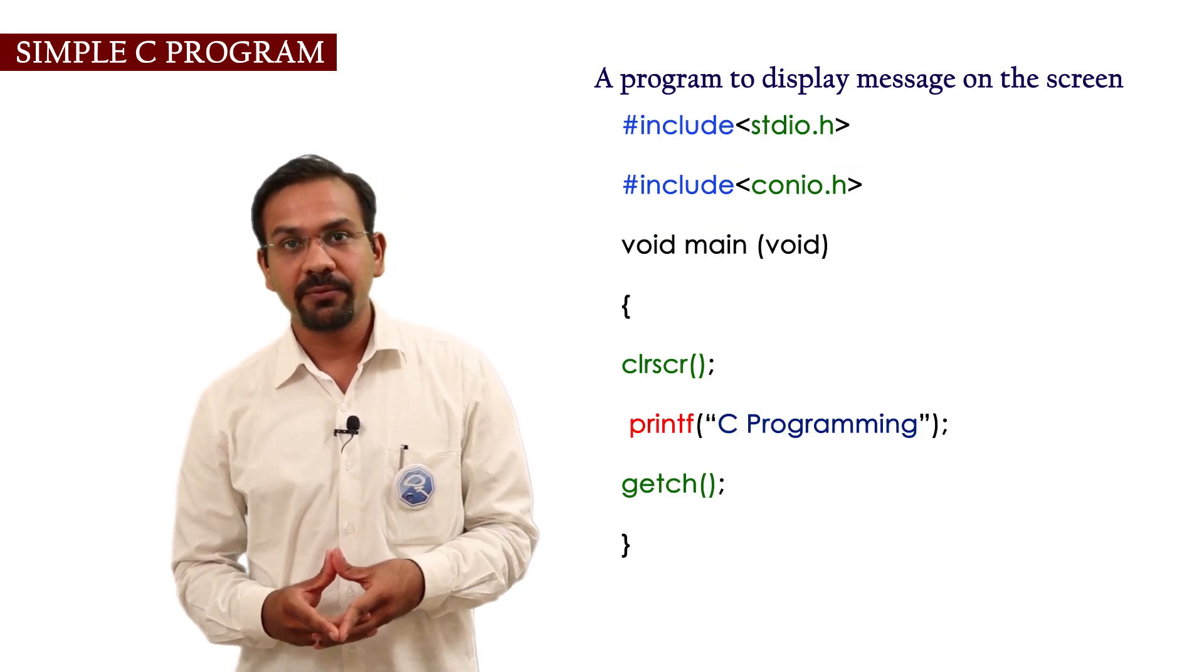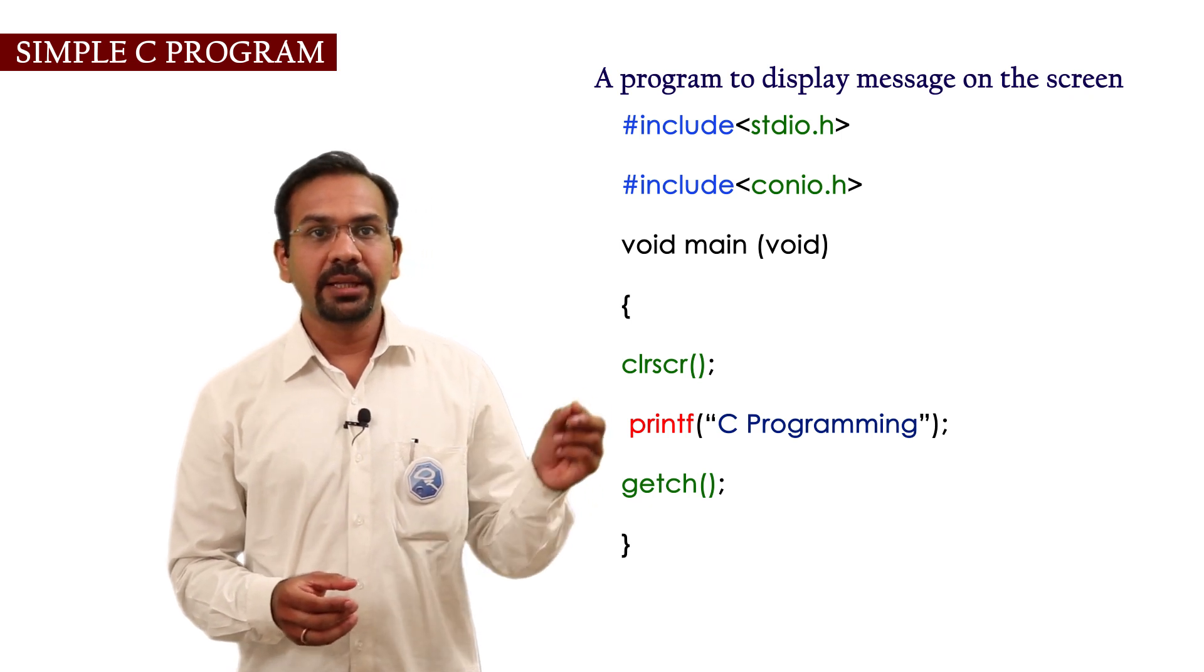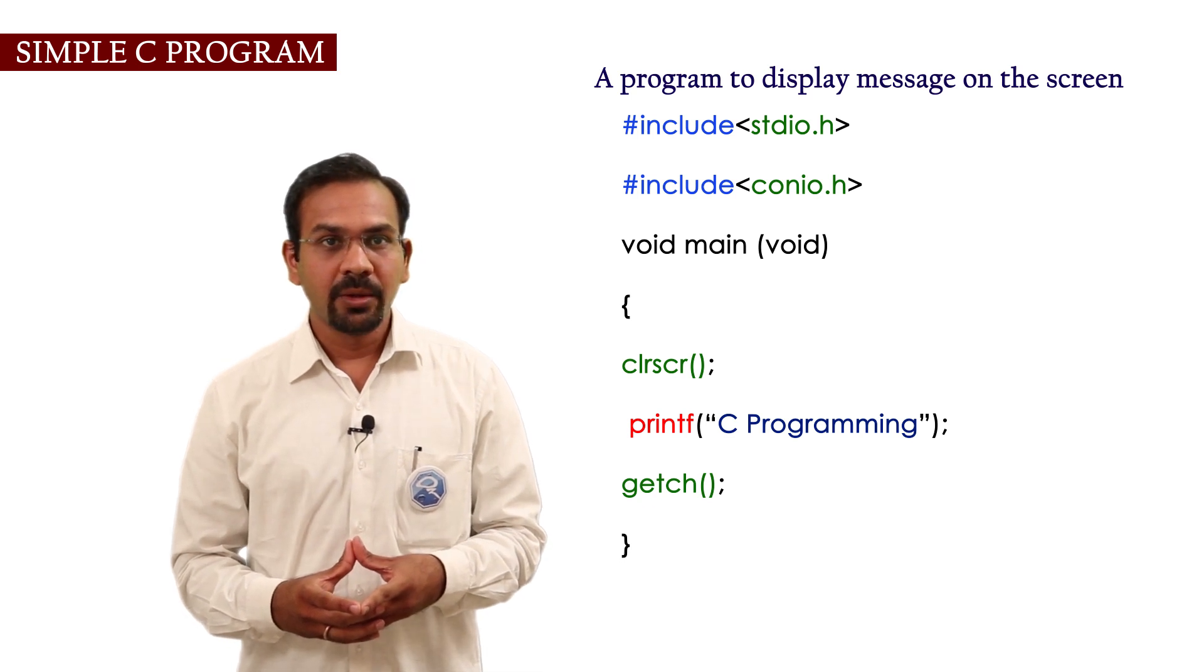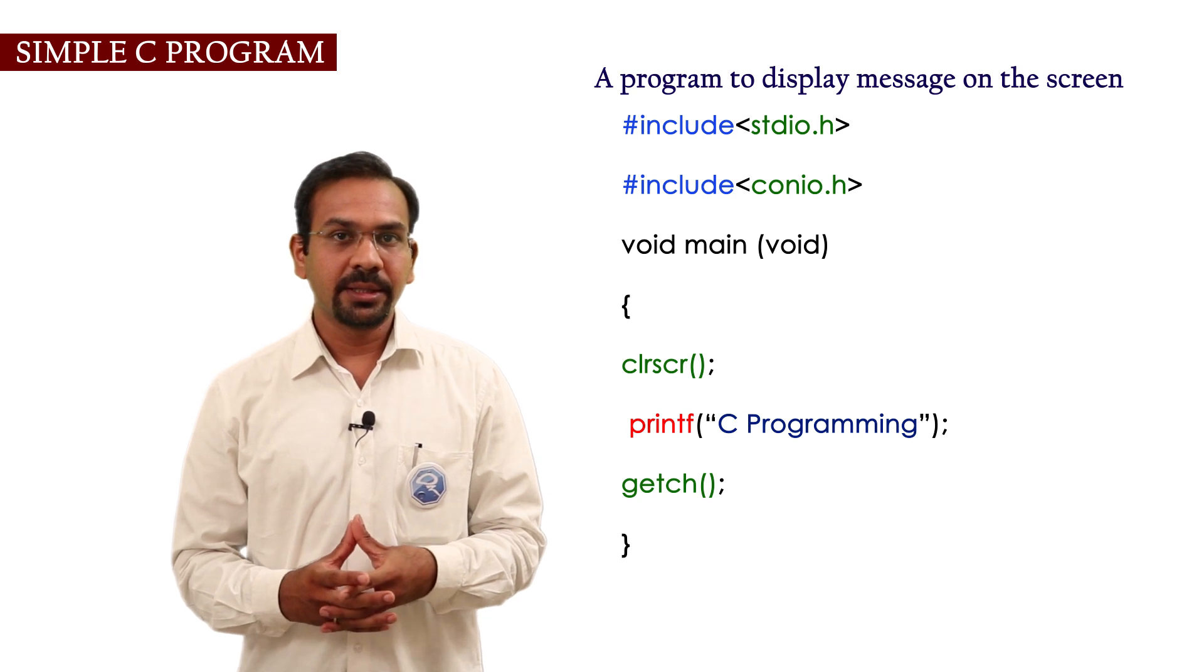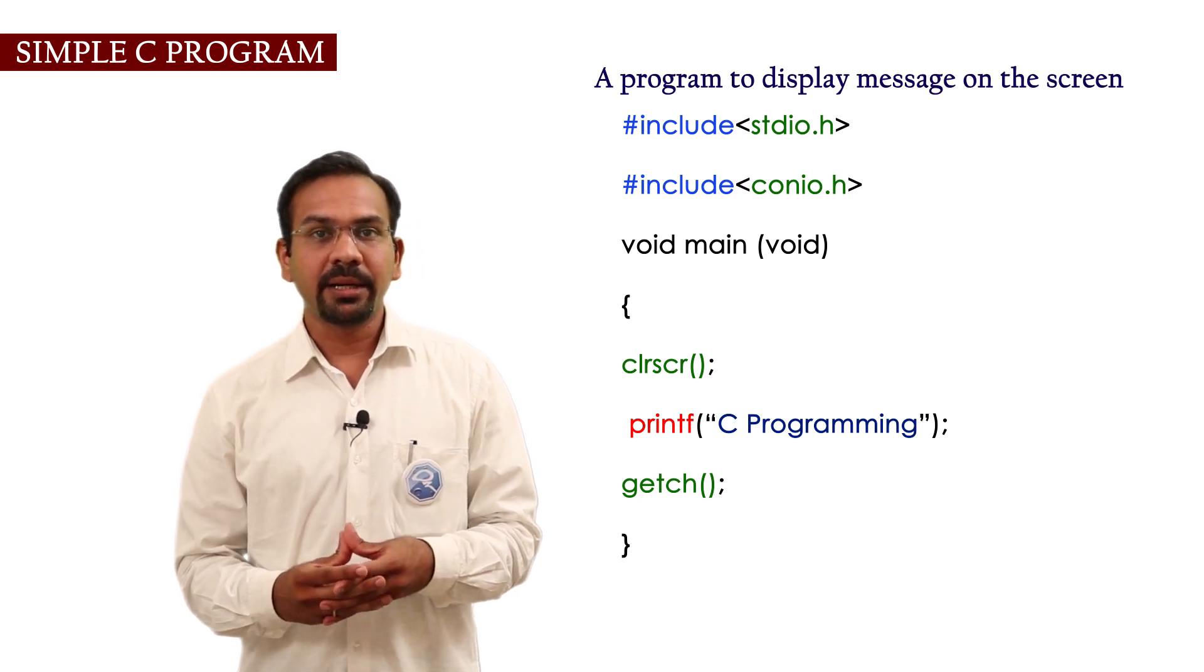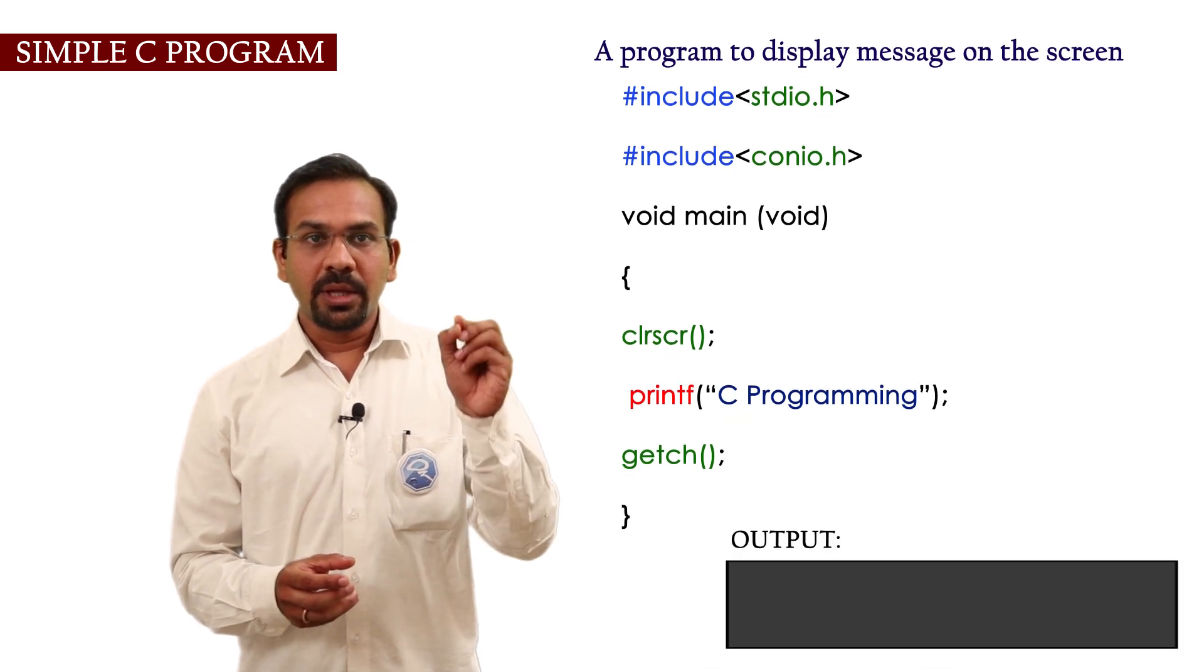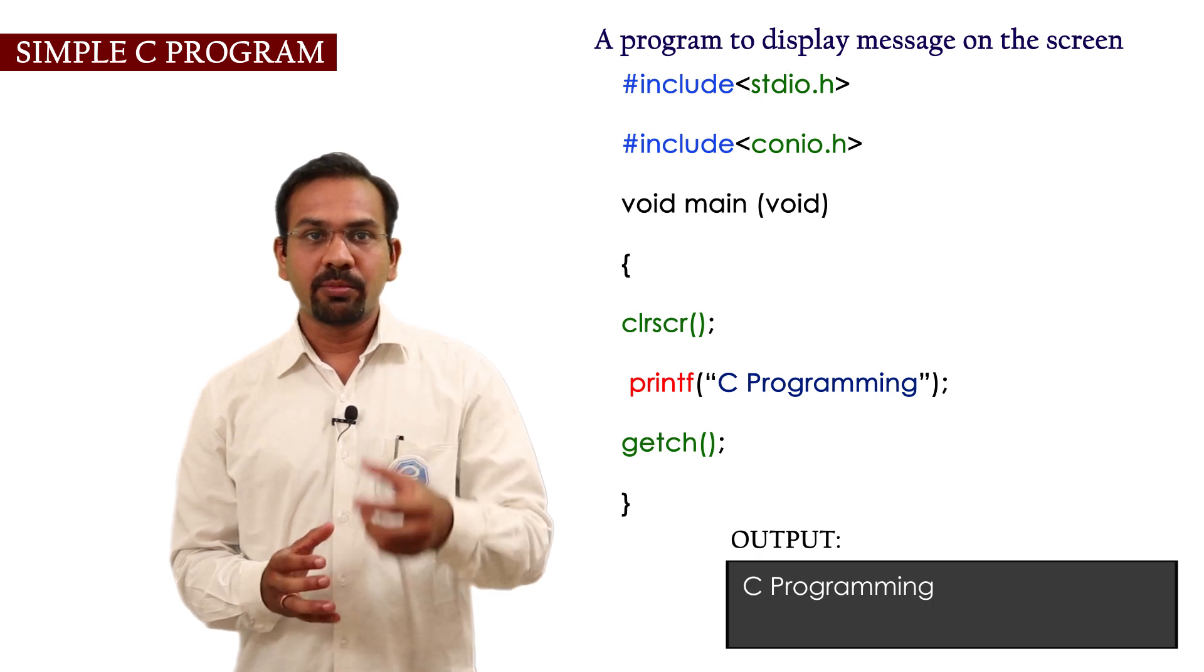We are using printf. Its syntax is printf in round brackets in double inverted commas message is written. We will write printf C programming. The statement is terminated by semicolon. Now the output of this program will print C programming at the output.